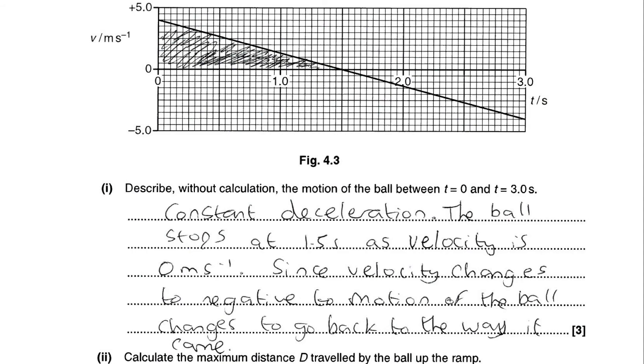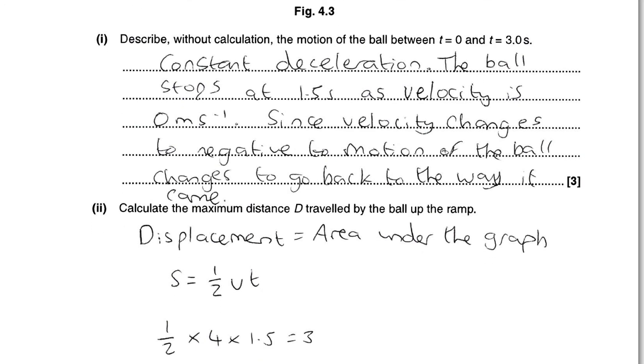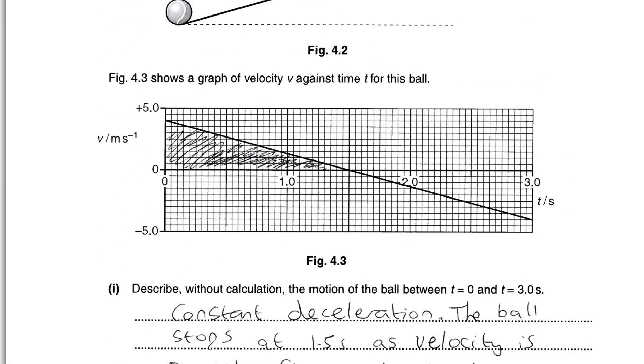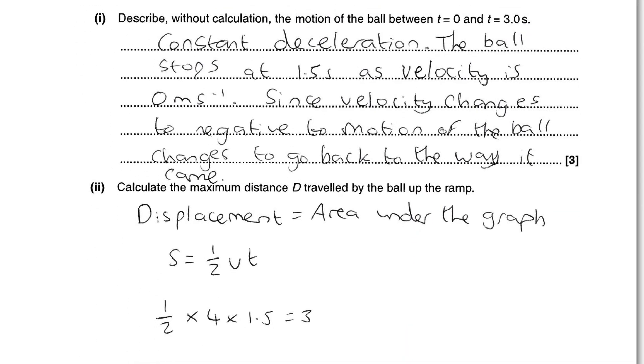Okay, so this is question 4C part 2. Calculate the maximum distance D traveled by the ball up the ramp. So as you know, displacement is the area under the graph. So as you can see from the shaded area on the graph, we have a triangle, a right-angled triangle. So we know it's just going to be half base times height, or a half Vt in this case. So we do a half times 4 times 1.5 equals 3 meters.